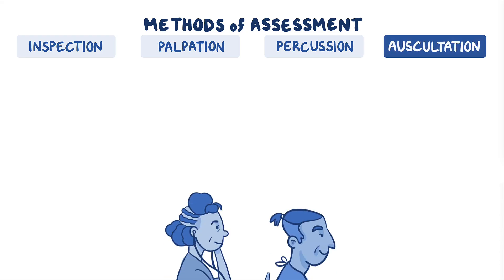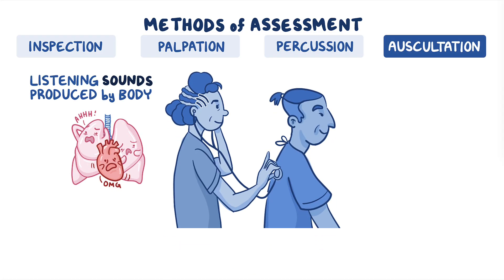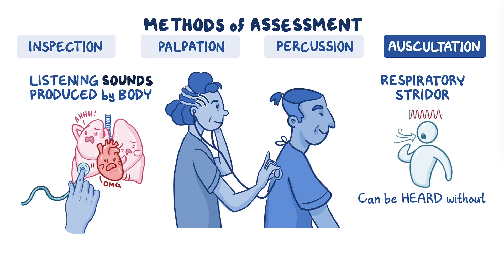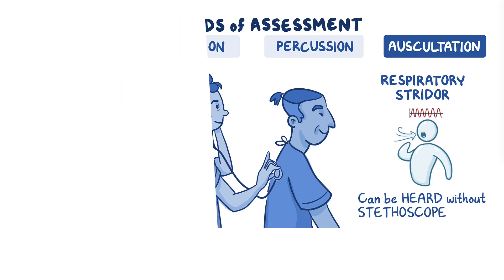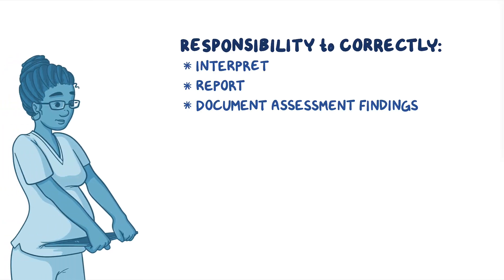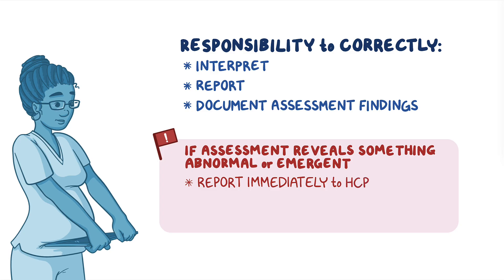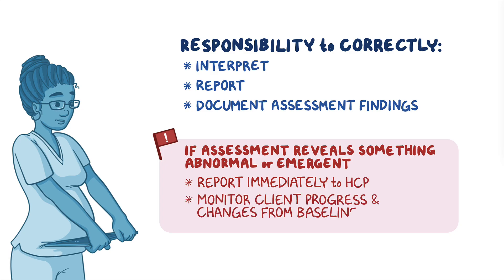Finally, there's auscultation, which involves listening for sounds produced by the body. For example, you can use a stethoscope to auscultate heart and lung sounds, or you can listen for sounds like respiratory stridor, which often can be heard without the use of a stethoscope. As the nurse, it's your responsibility to correctly interpret, report, and document your assessment findings. If your assessment reveals something that's potentially abnormal or emergent, you should report this immediately to the healthcare provider while monitoring client progress and changes from baseline.